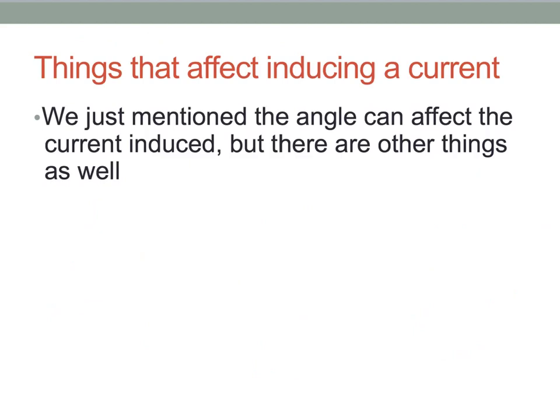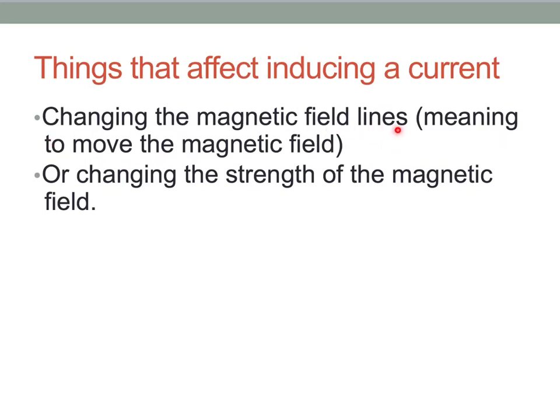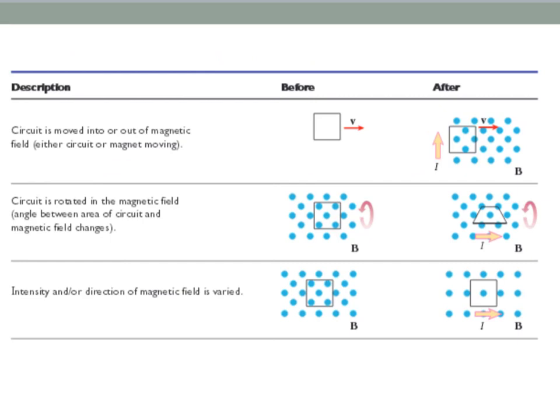There's some other things that we can affect induction with as well. So we just mentioned that angle can affect the current induced. But there are other things. So for example, if we change the magnetic field lines, which really means that we are going to move the magnetic field. So we don't just have to move the loop of wire. We can also move the magnetic field. The other thing we can do is change the strength of the magnetic field. Make it stronger or weaker. Change it somehow. That is also enough to induce a current. So I actually really like this table in your book. I believe this is on page 710 or 510. Let's go 510. I'll let you know for sure in class.